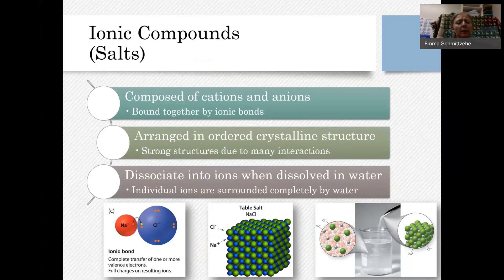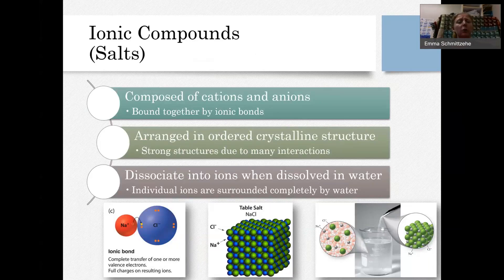The atom that gives up electrons — whether one, two, or three — forms a cation, a positively charged ion. The one that takes on those electrons forms an anion, a negatively charged ion. Those are then attracted to each other because of their opposite charges.